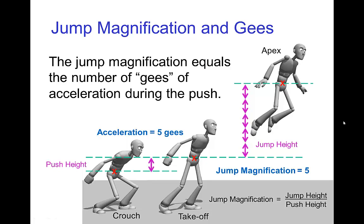Getting back to jumps, it turns out the jump magnification equals the number of g's of acceleration during the push. If you were strong enough to have a jump with a jump magnification of 5, this would still be a challenge because you would experience an acceleration of 5 g's during the push — you might actually black out. If you stand up too fast, you can black out; the same thing would be happening here.